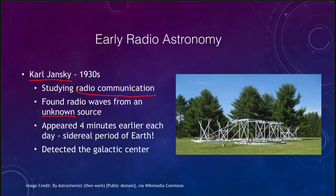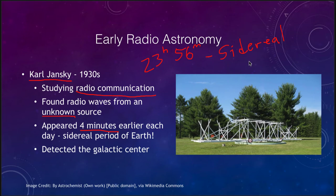What he eventually figured out is that because he was detecting them four minutes earlier each day, they were coming around every 23 hours and 56 minutes — the rotation period of the Earth relative to the stars, what we call the sidereal rotation period. Because of that, these objects were not associated with the Earth and could not be associated with the sun; they had to be something else out in space. What he was detecting was the galactic center. The center of our galaxy is invisible in visible light, but in radio waves it is one of the strongest radio sources in the sky, and therefore Carl Jansky was able to detect it with his early instrumentation.